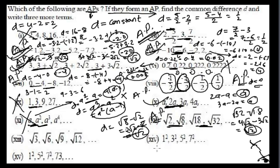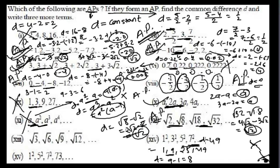The sequence 1², 3², 5², 7² gives 1, 9, 25, 49. The common difference is 9 minus 1 equals 8. But 49 minus 25 equals 24. Since the common differences are not the same, this is not an arithmetic progression.